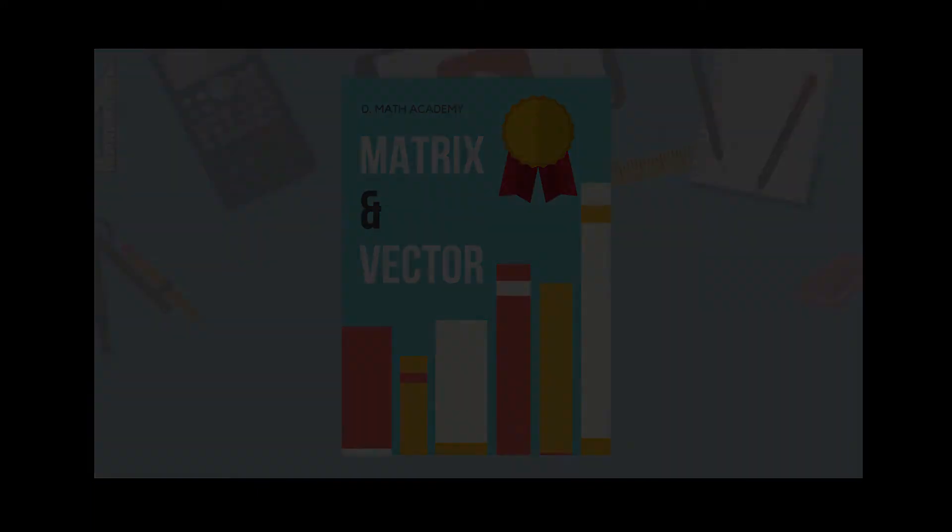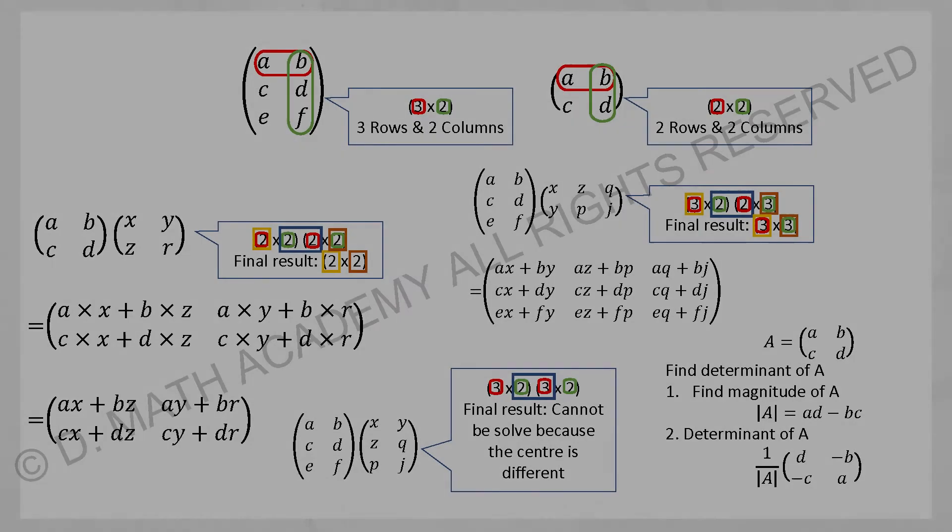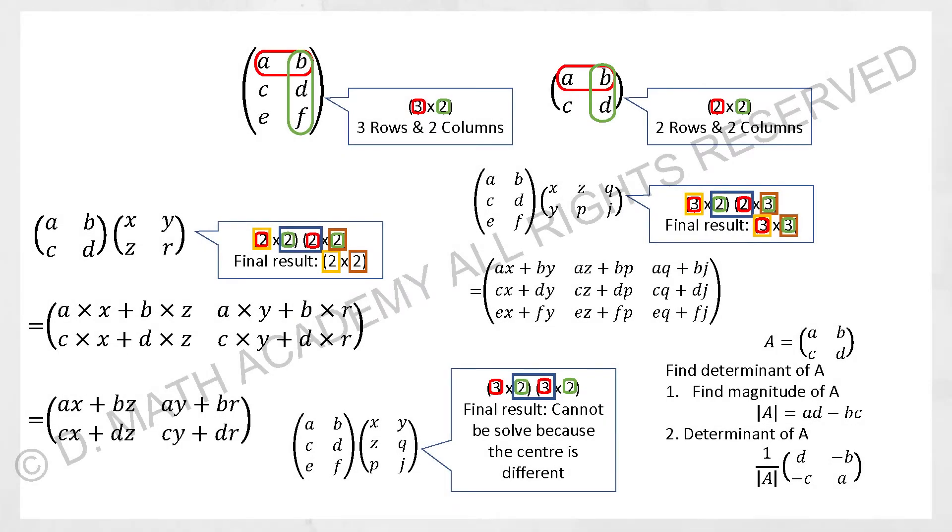So for the next chapter, matrix and vector. Over at the first slide here, you need to identify the rows and column. The reason why you do so is to verify whether it is possible for you to run the calculation or not at the first place.